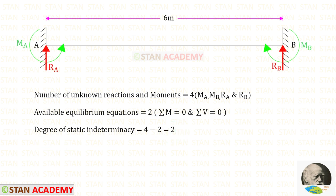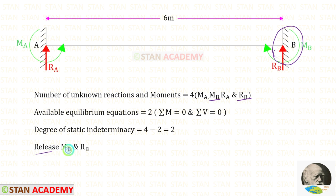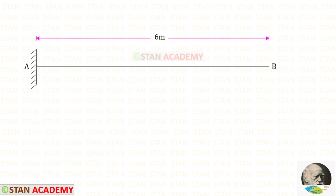To make this beam statically determinate, we have to remove any two unknowns. We know that there is settlement in support B, so we have to select support B. At support B we have MB and RB. Let us release MB and RB. From point B, I have removed MB and RB, so point B becomes a free end.